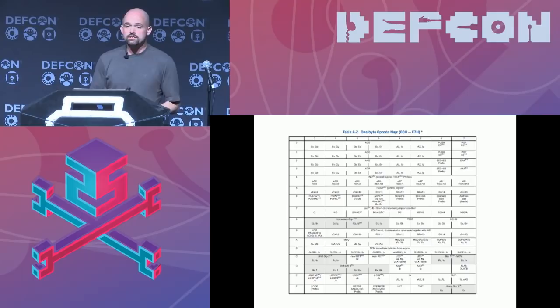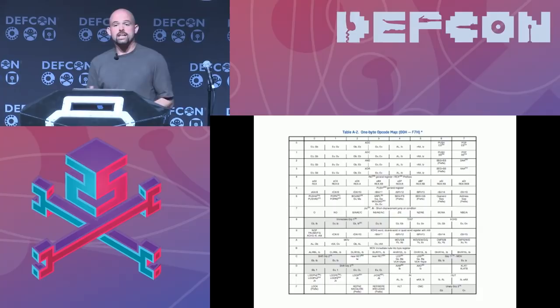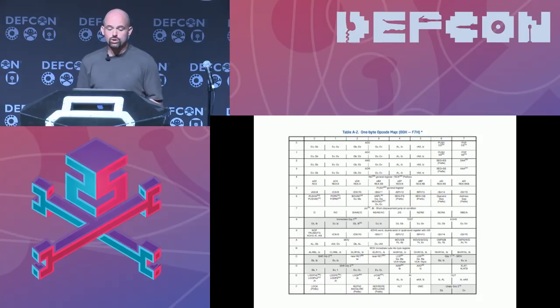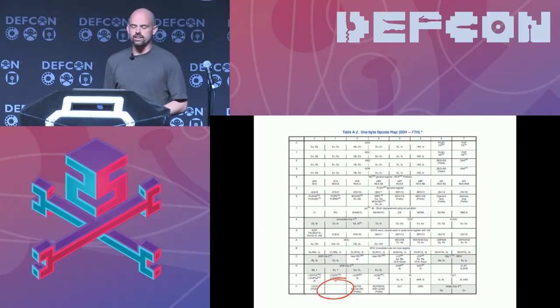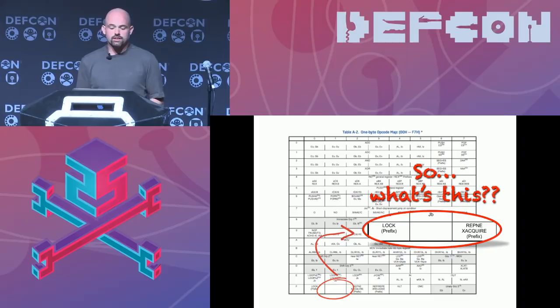If you go into your processor's documentation — Intel Software Developer Manual Volume 2 — near the end you'll see dozens of opcode maps. These enumerate all the instructions your processor supports: when the processor sees this byte, it executes this instruction. But if you look closely at these opcode maps, you'll notice gaps here and there. This document is supposed to tell us everything the processor does — the document we're basing all our trust on — but it's intentionally leaving things out. That's not a good start for trust.